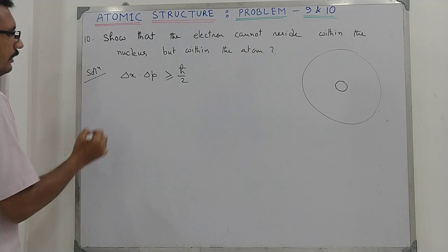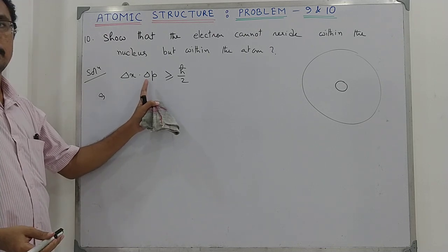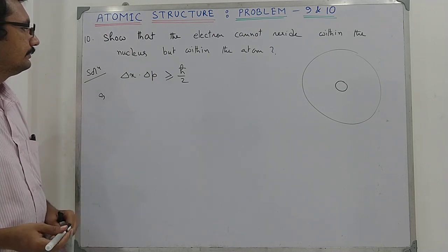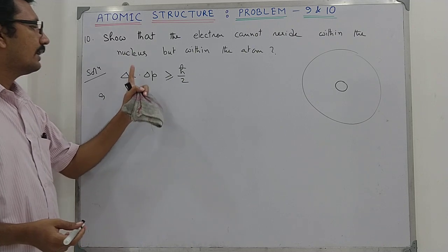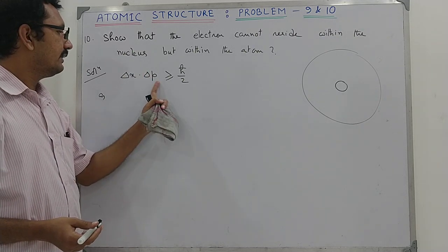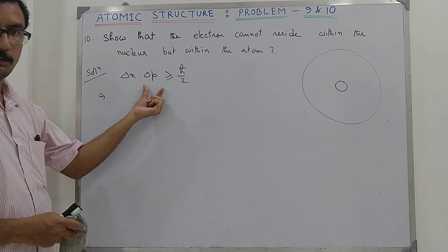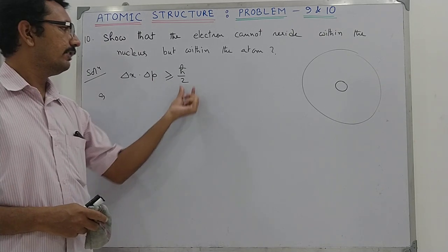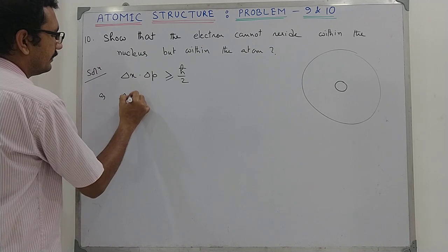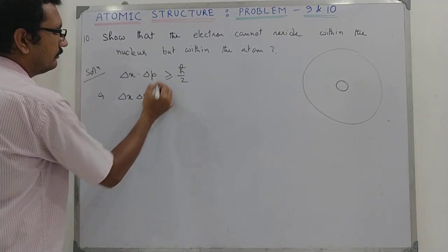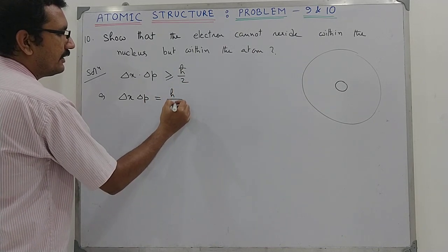The Heisenberg uncertainty principle is: Δx · Δp ≥ ℏ/2. Here Δx is the uncertainty in position of the electron, and Δp is the uncertainty in momentum. The product of these two has a minimum value of ℏ/2. For the math, we use the equality: Δx · Δp = h/(4π), since ℏ = h/(2π).